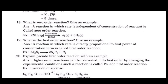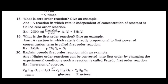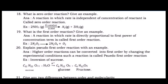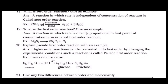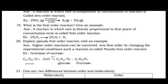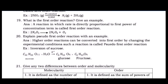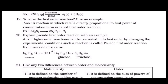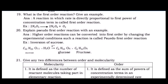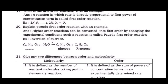Question 20: Explain pseudo first order reaction with an example. Answer: Higher order reactions can be converted into first order by changing the experimental conditions; such a reaction is called pseudo first order reaction. Example: Inversion of sucrose — C₁₂H₂₂O₁₁ + H₂O → C₆H₁₂O₆ (glucose) + C₆H₁₂O₆ (fructose).